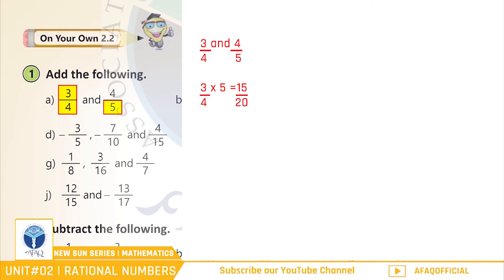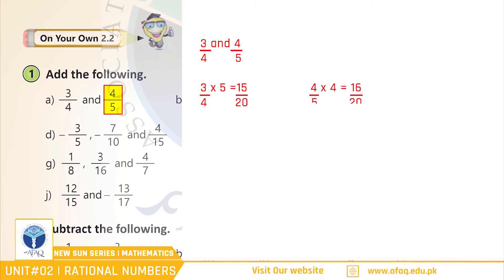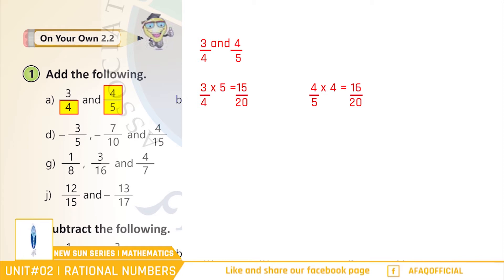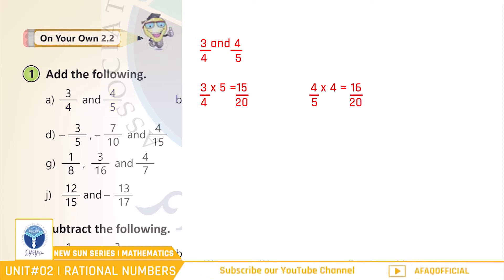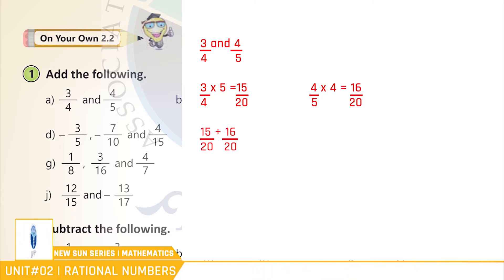اس multiplication سے ہمارے پاس 3/4 کا equivalent fraction 15/20 آ جائے گا۔ اب ہم نے دوسرے fraction 4/5 کو پہلے fraction کے denominator 4 سے multiply کرنا ہے، جس سے ہمارے ساتھ حاصل ہوا 16/20، جو کہ equivalent fraction ہے 4/5 کا۔ اب دونوں fractions کا denominator 20 ہے، جو کہ ہم نے fraction کے نیچے لکھا اور اوپر دونوں fractions کے numerators 15 اور 16 کو add کیا۔